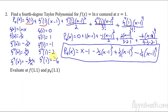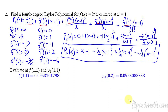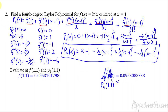Plugging in 1.1 to the actual function gives this long decimal, and plugging 1.1 into our approximation P4 gives a value that matches to five decimal places before it's different. That's a pretty good approximation — really impressive. Fourth degree gives a better approximation, and you keep going if you want better and better. That's how these Taylor polynomials work.